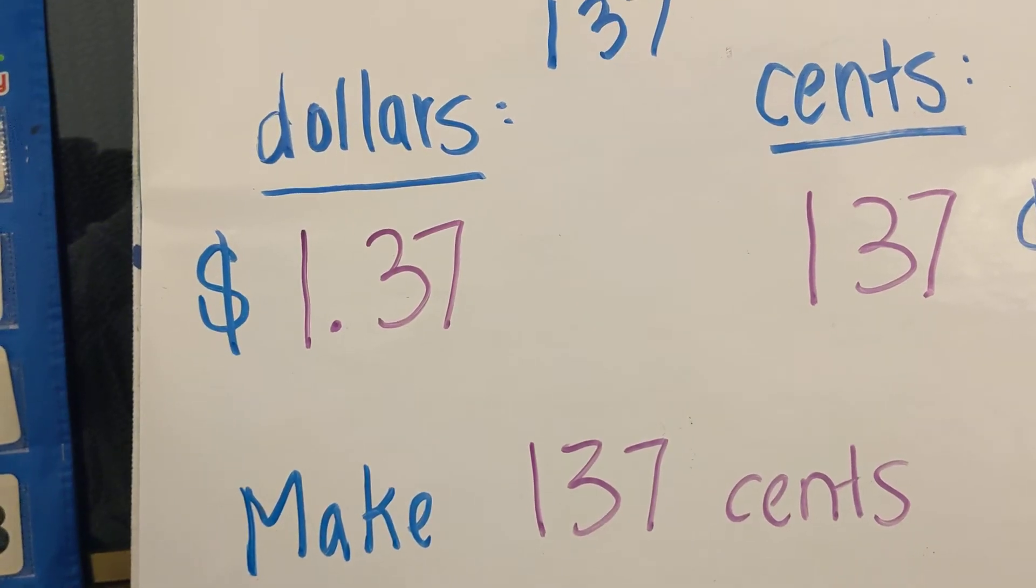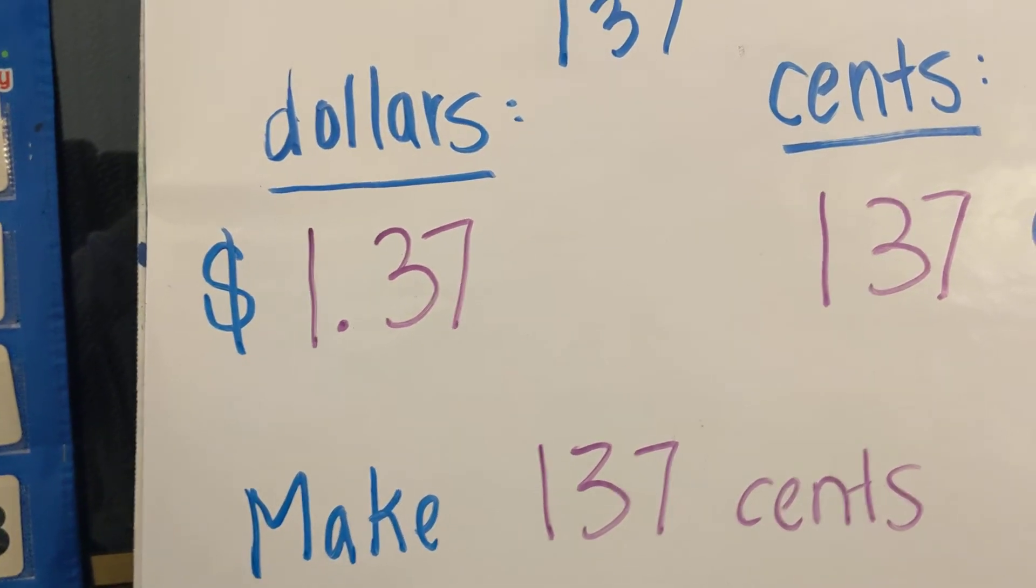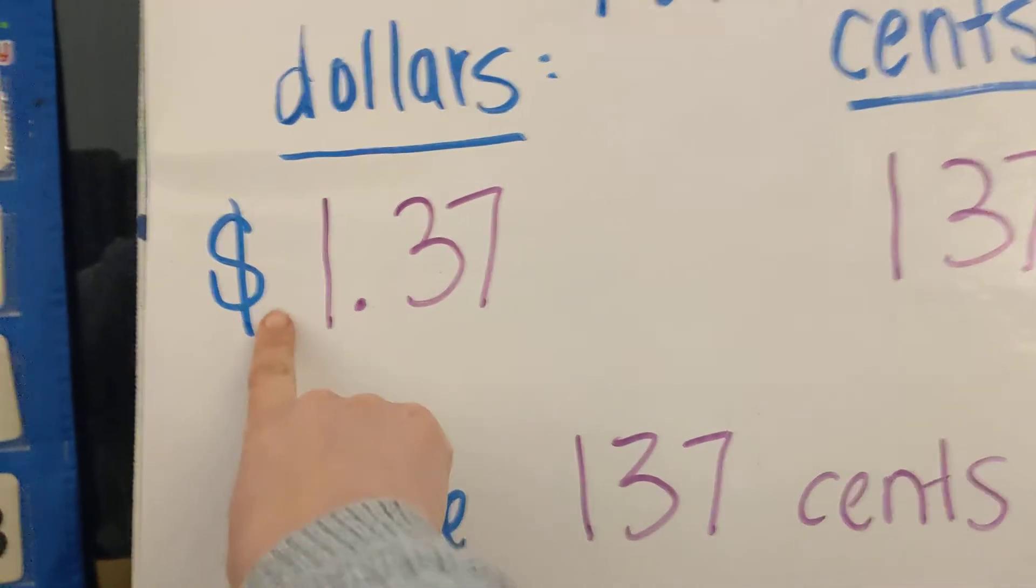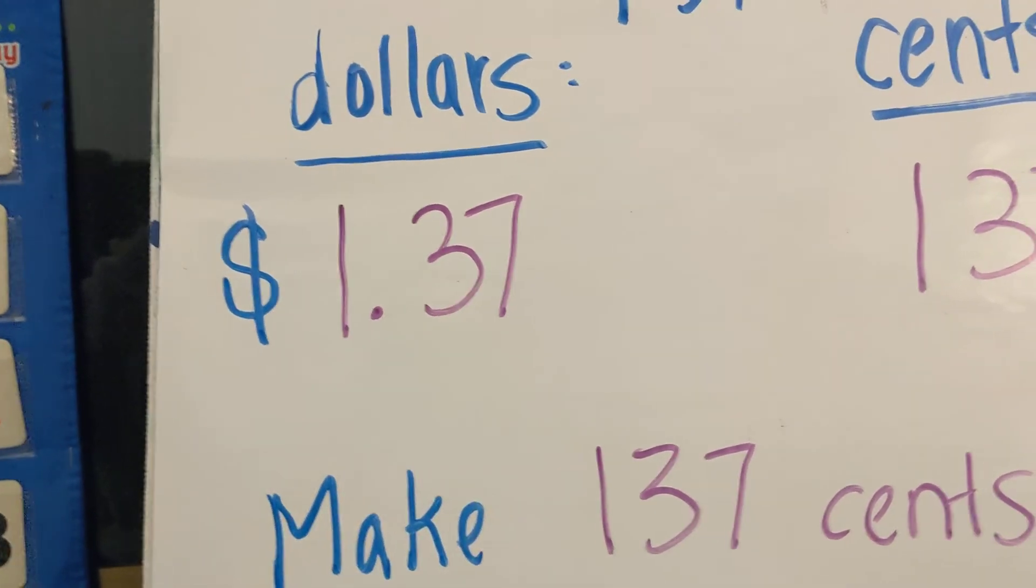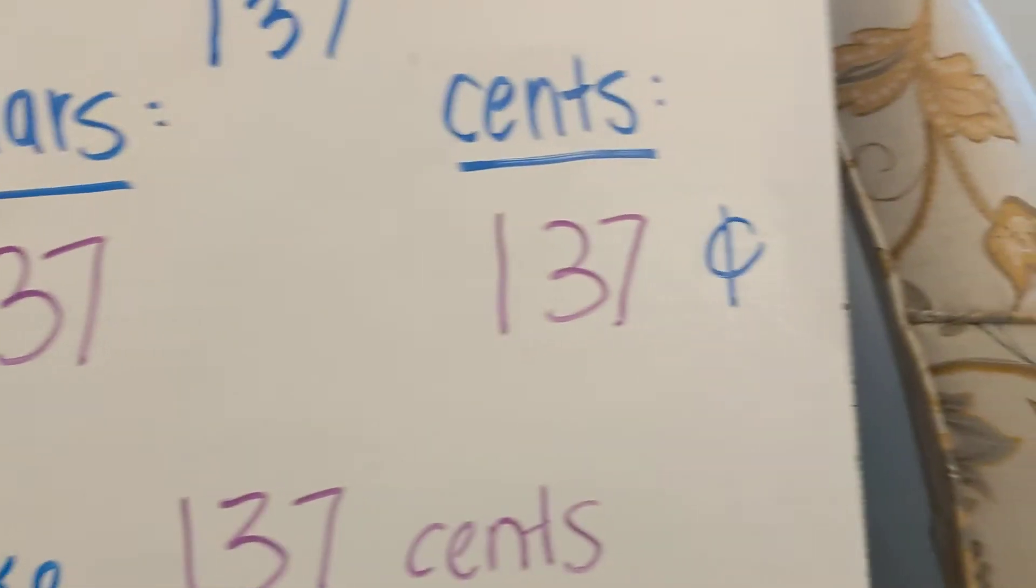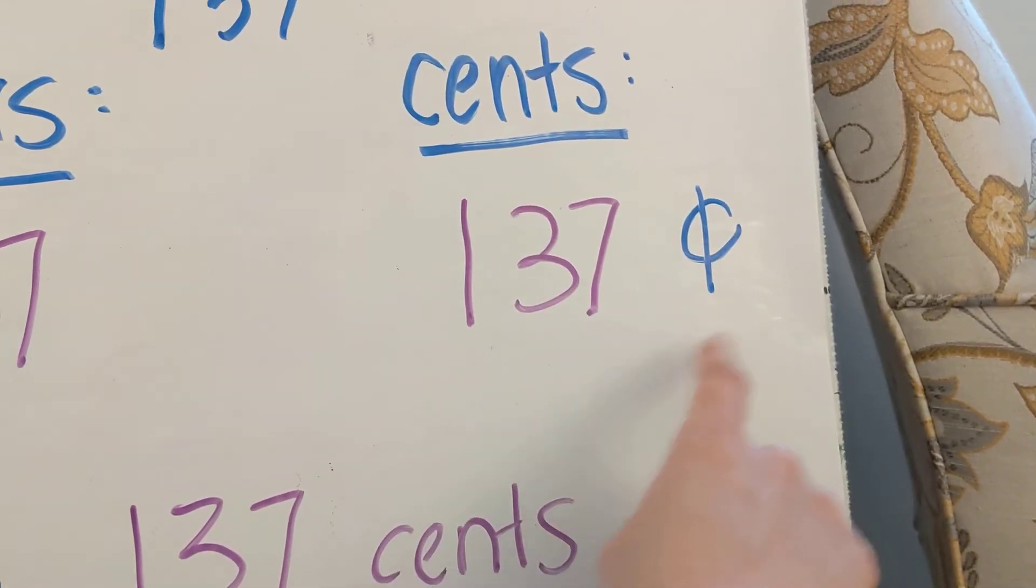Okay, you should have under the dollars portion of your paper, one dollar and thirty-seven cents. Don't forget the dollar sign, and the decimal point. Those are the two most important things when you're writing money. Over here with the cents, we don't need a decimal point. We just write one hundred thirty-seven cents.